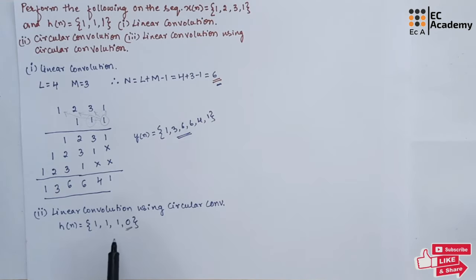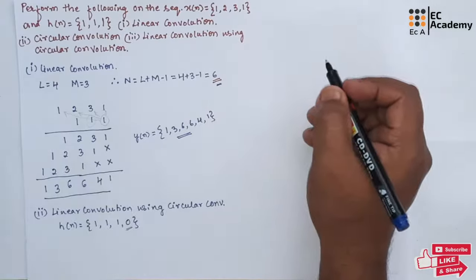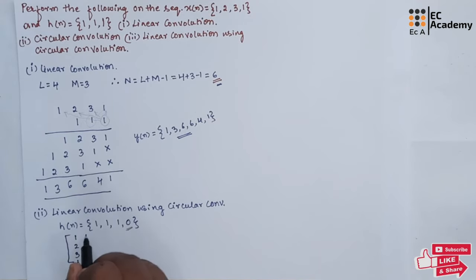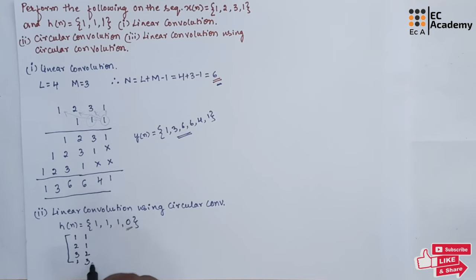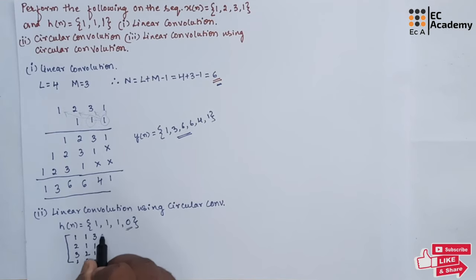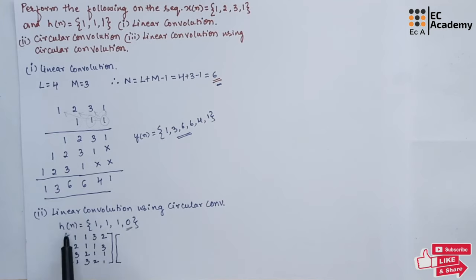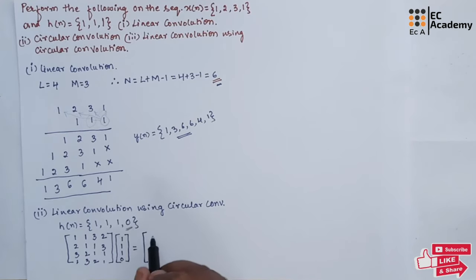Once we make the sequences the same length, let us write the matrix form of x of n: 1, 2, 3, 1; then starting with 1: 1, 1, 2, 3; starting with 3: 3, 1, 1, 2; starting with 2: 2, 3, 1, 1. This is the circulant matrix of x of n. We multiply this with h of n, which is 1, 1, 1, 0. If we multiply these two matrices, we get the answer as 5, 4, 6, and 6.